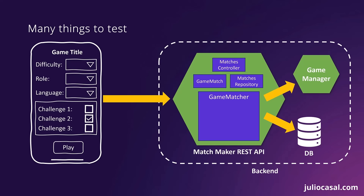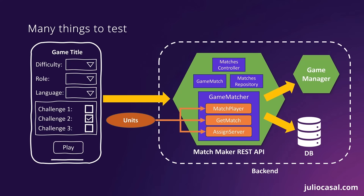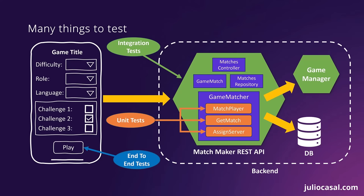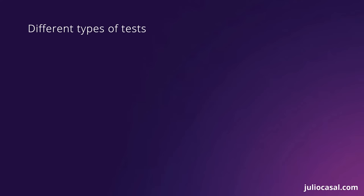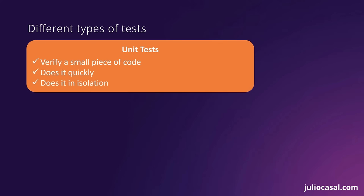If we look into the game matcher component, we'll see that it provides multiple functions that allow callers to make use of its features. In testing terms, these functions are called units, since they are the smallest testable part of the component. When verifying the behavior of an application, developers usually start by creating unit tests, which make sure these units work properly in isolation. Later, they will develop integration tests, which test that the entire matchmaker REST API works properly when it combines its multiple components with external services. Finally, developers or a dedicated test team will create end-to-end tests to verify the entire application works properly from an end-user perspective. Unit tests are meant to verify small pieces of code in isolation, and since they are isolated from any external services or processes, they can run very fast.